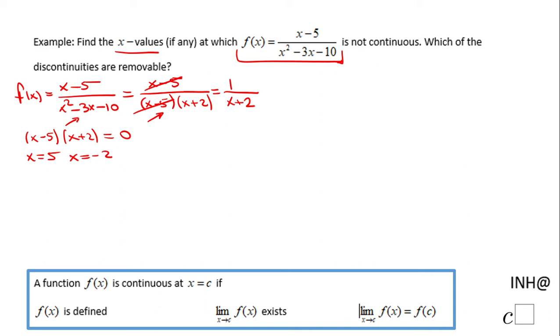These are the points where the function is not continuous because it makes the denominator equal to zero. Now, because this x - 5 cancels out, we call this one removable. And because x + 2 remains, that will be non-removable.